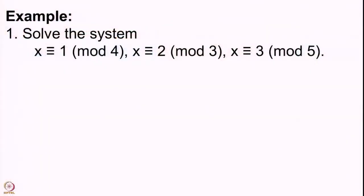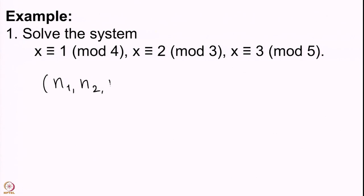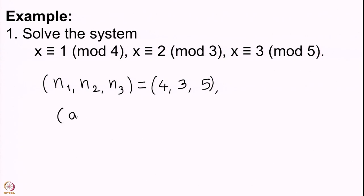This system asks us to solve x ≡ 1 mod 4, x ≡ 2 mod 5, x ≡ 3 mod 3. Here a1 = 1. Let us write all our tuples: n1, n2, n3 are 4, 3, and 5 in that order, and clearly they are all pairwise co-prime. Then a1, a2, a3 are 1, 2, and 3.